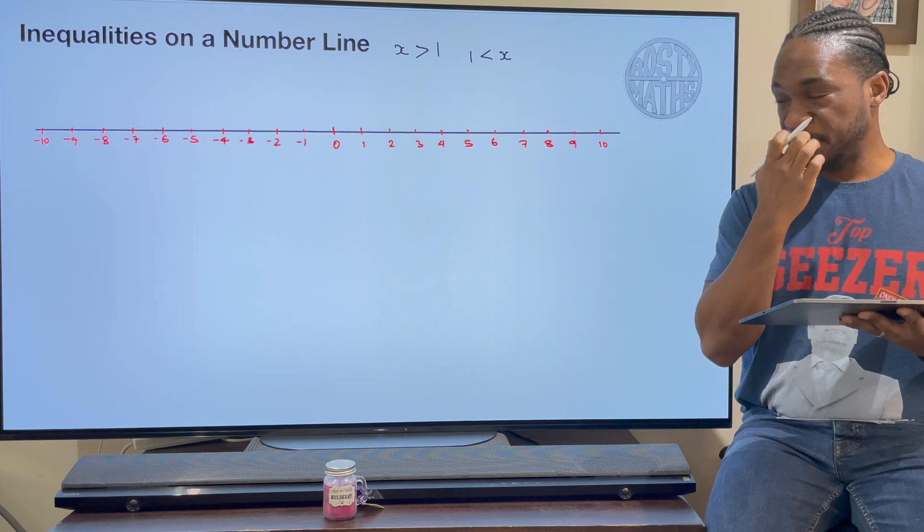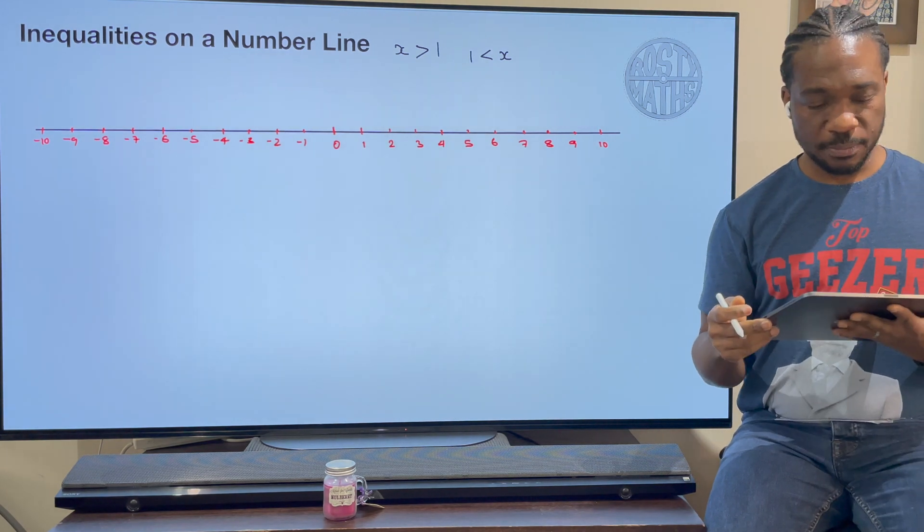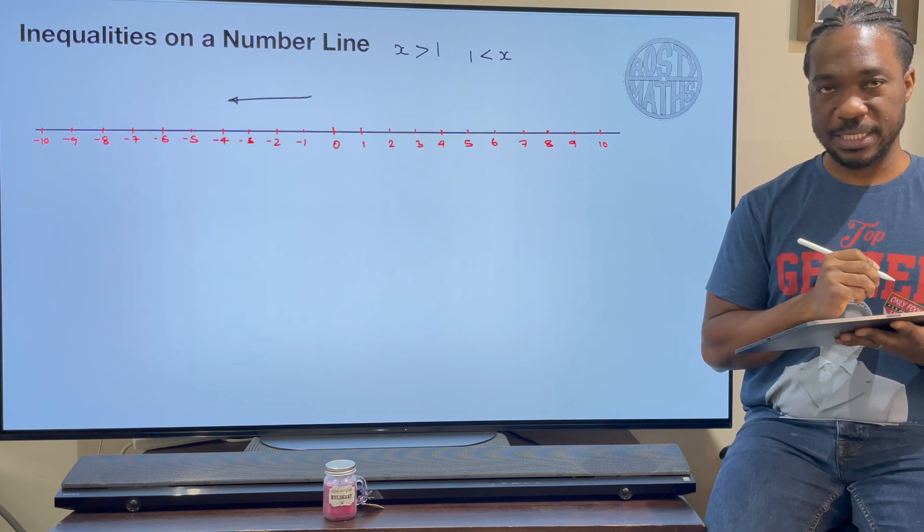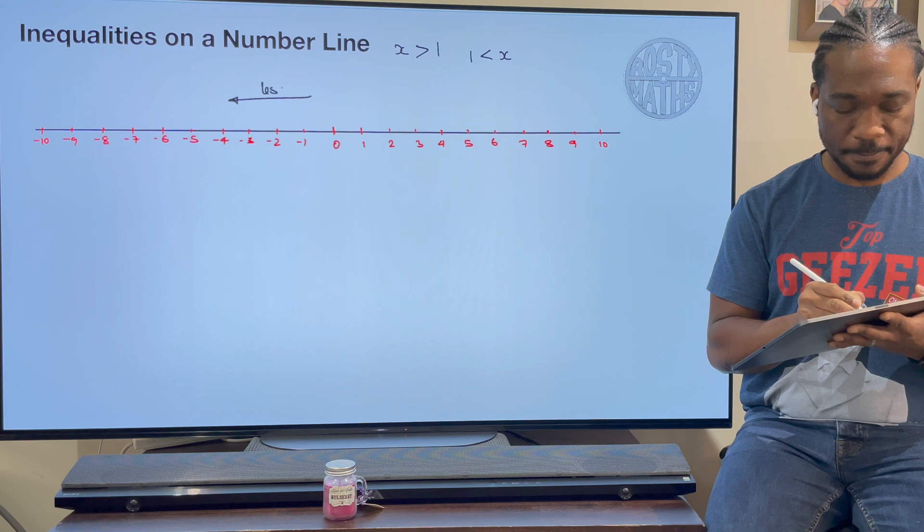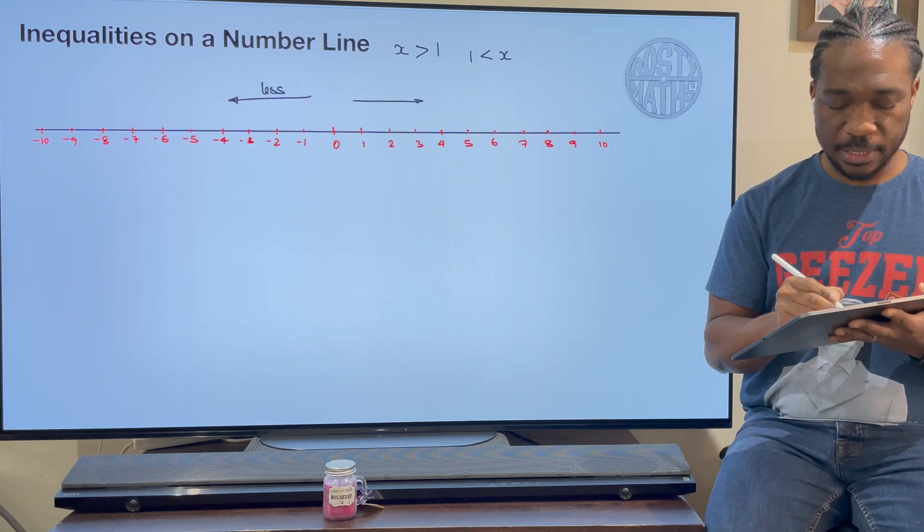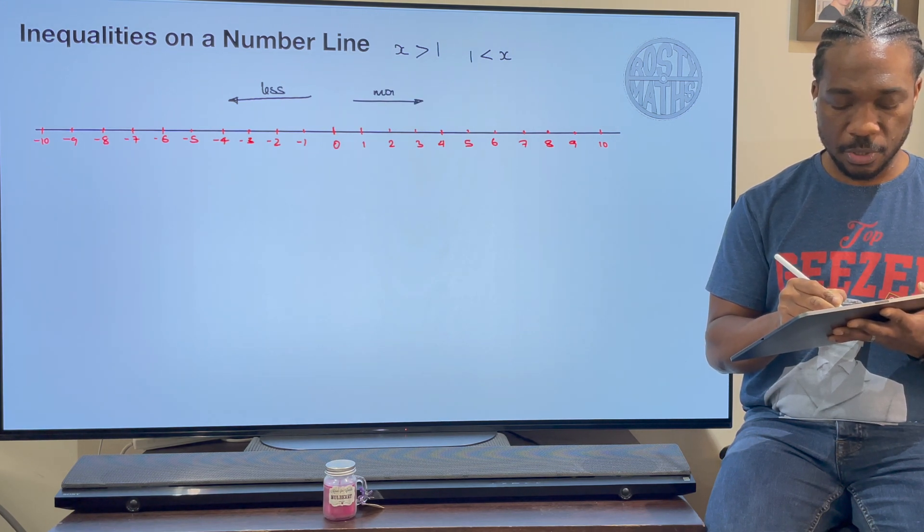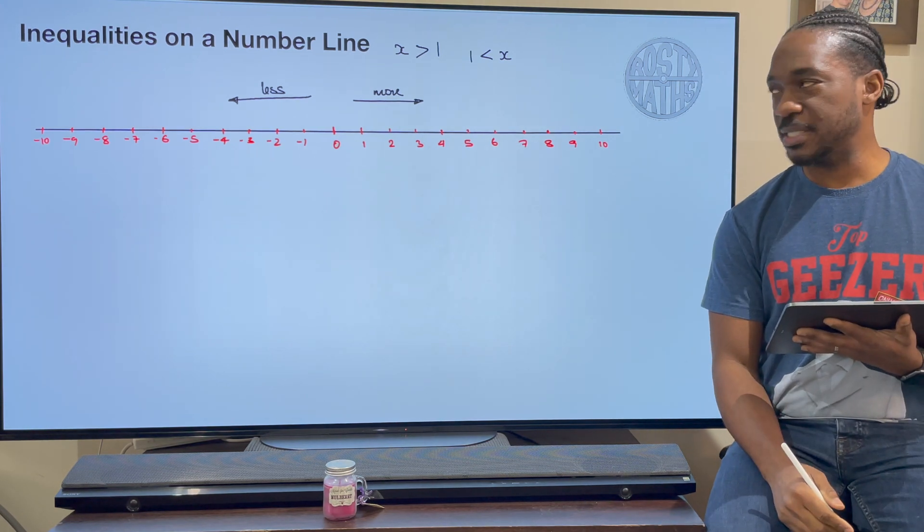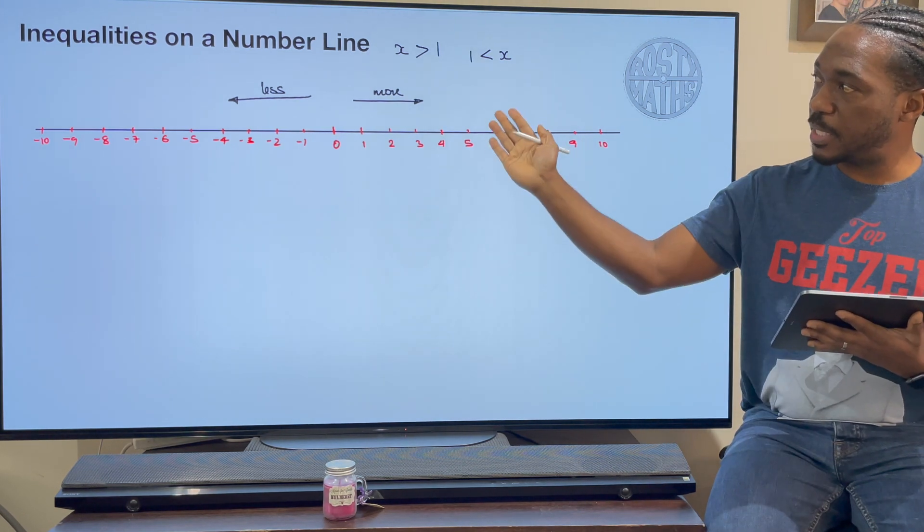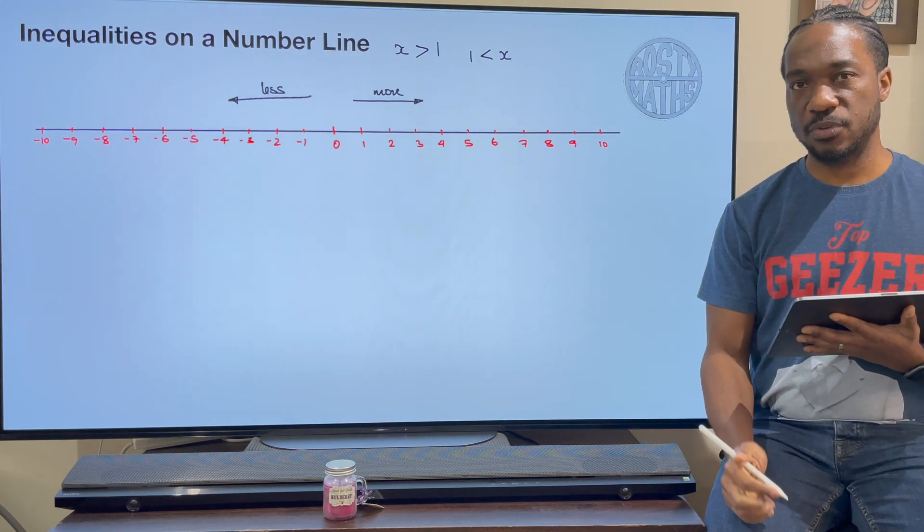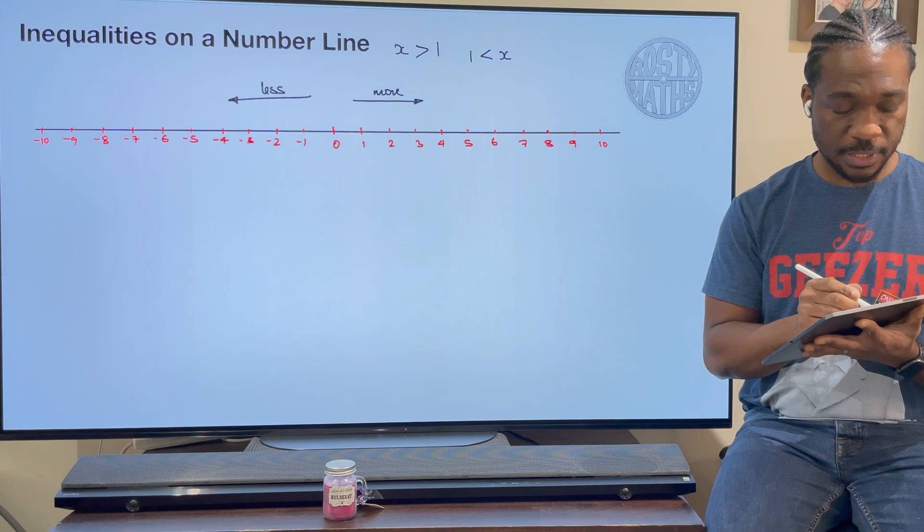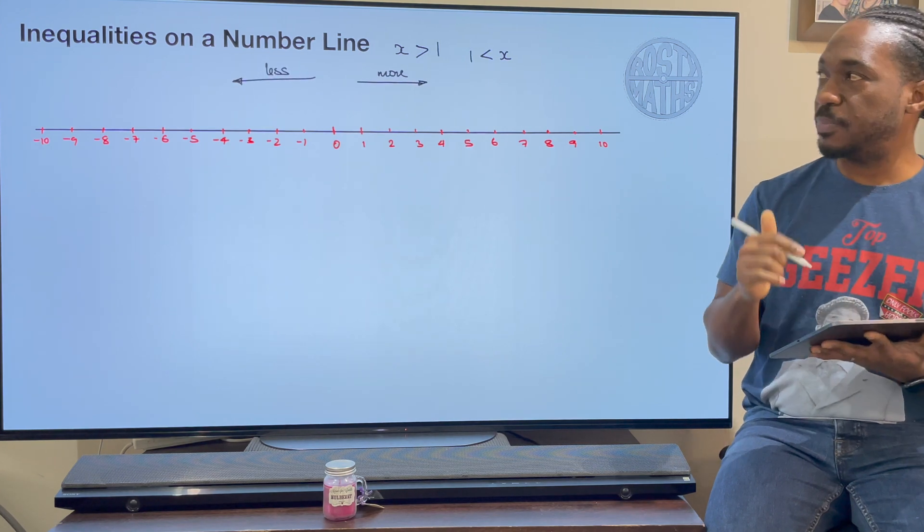The next thing is, here's my number line. Now on my number line, if I go this way then I'm getting less, and if I go that way then I'm getting more or greater than. So that's the next thing I want you to understand. Now let's start putting some inequalities on the number line to give you an idea as to what we're actually doing in this video today.